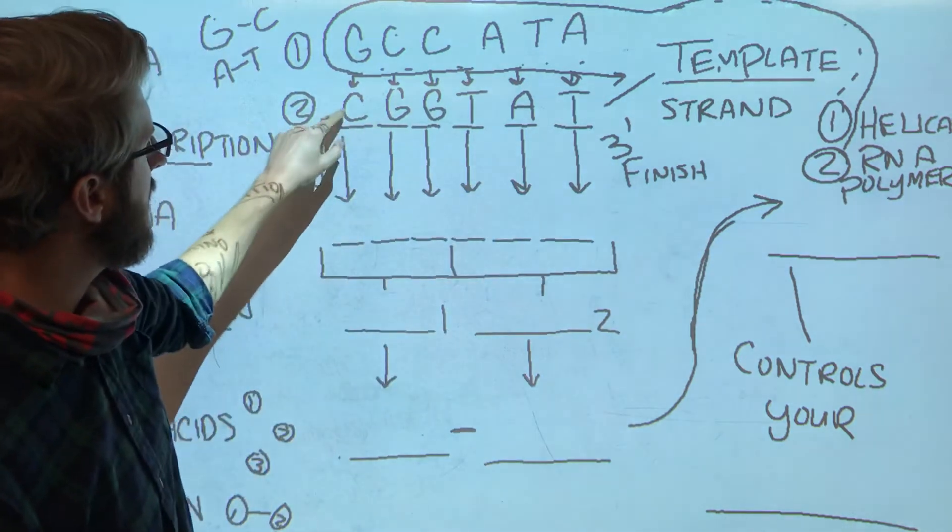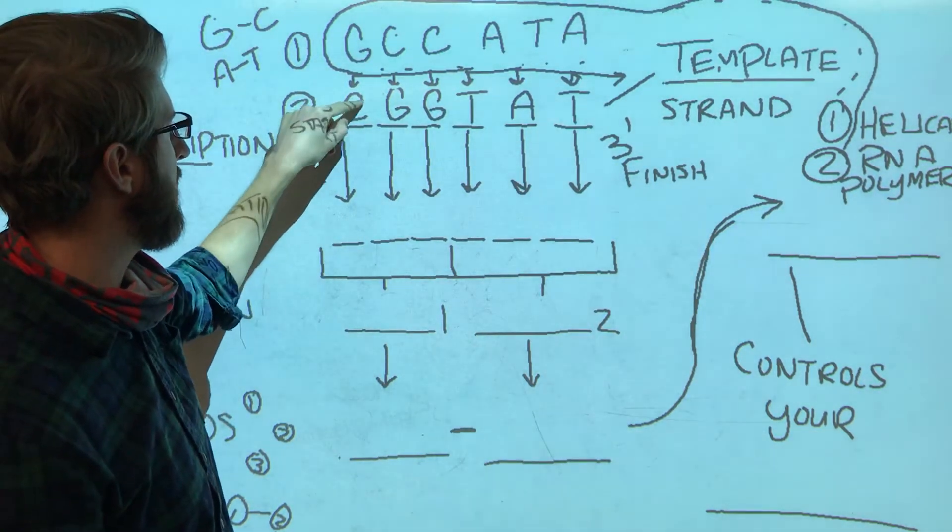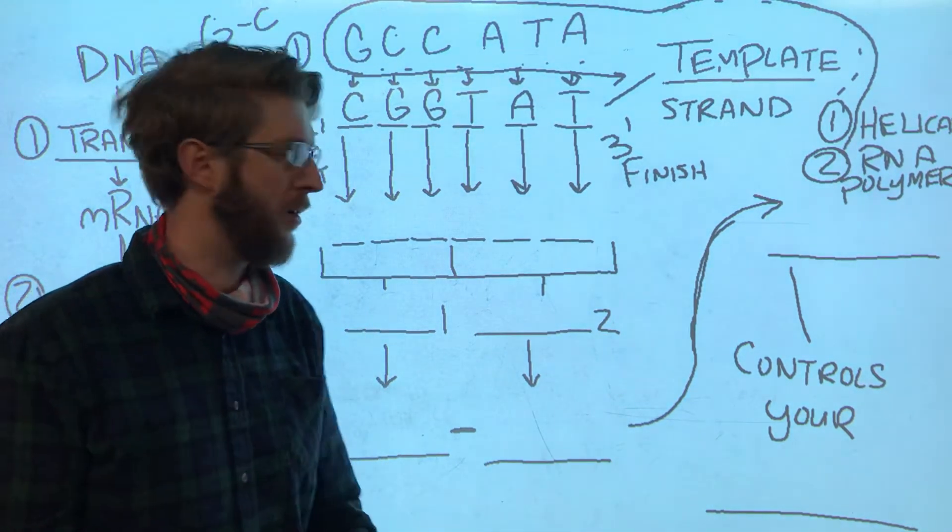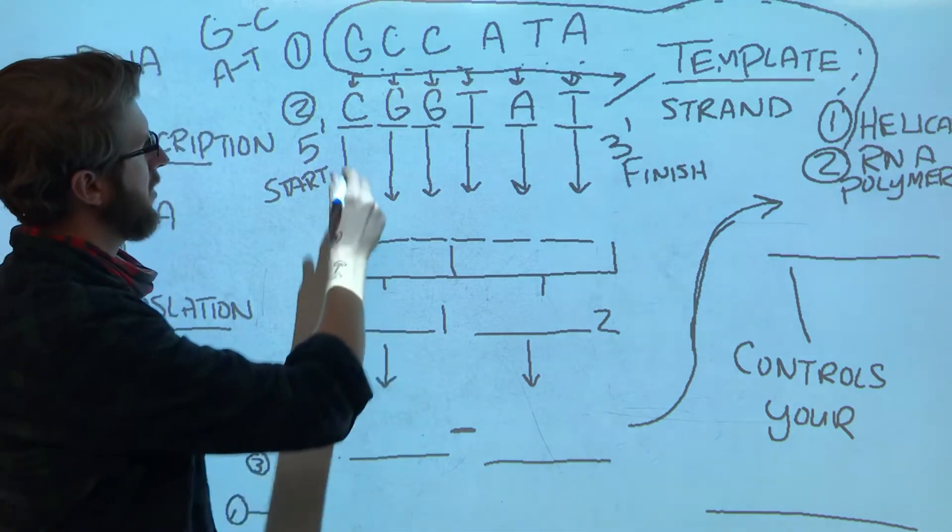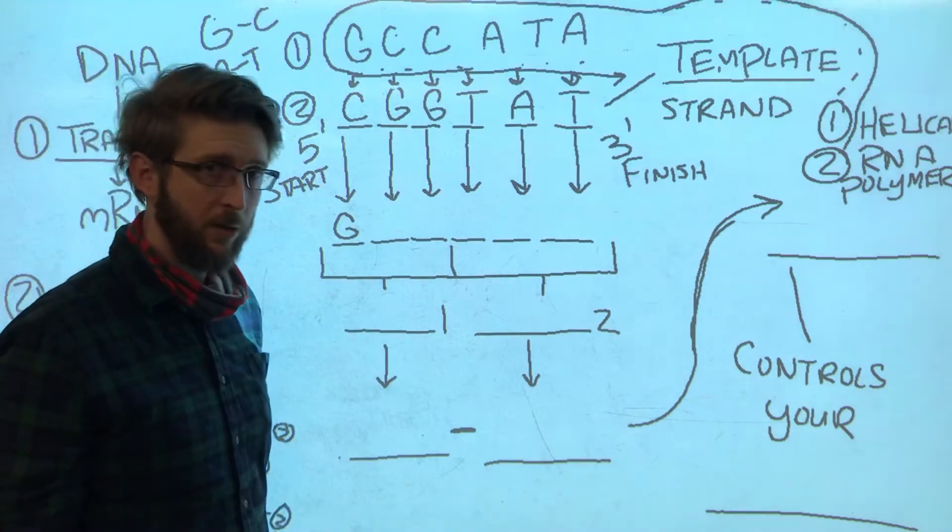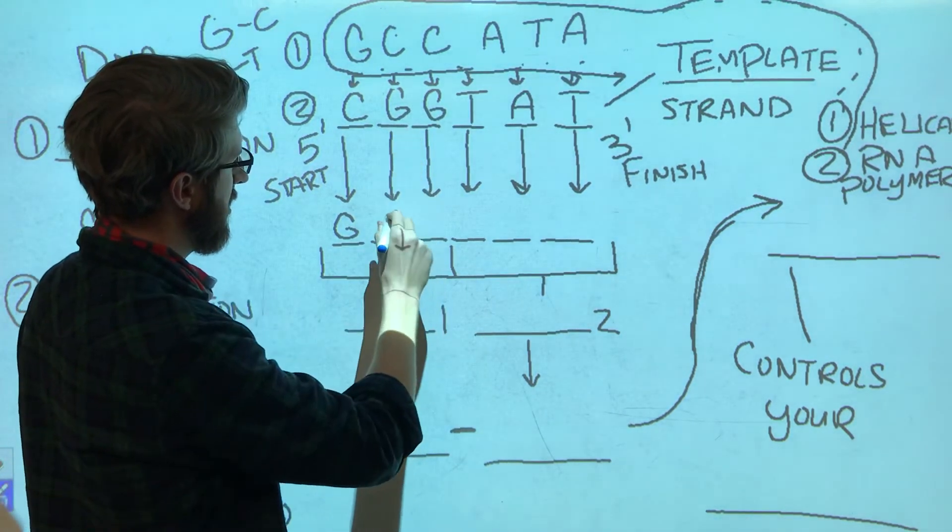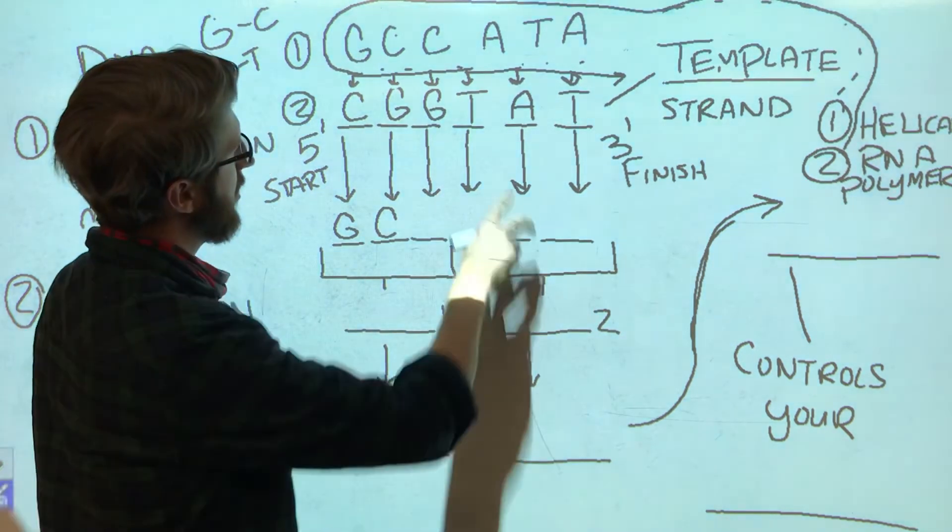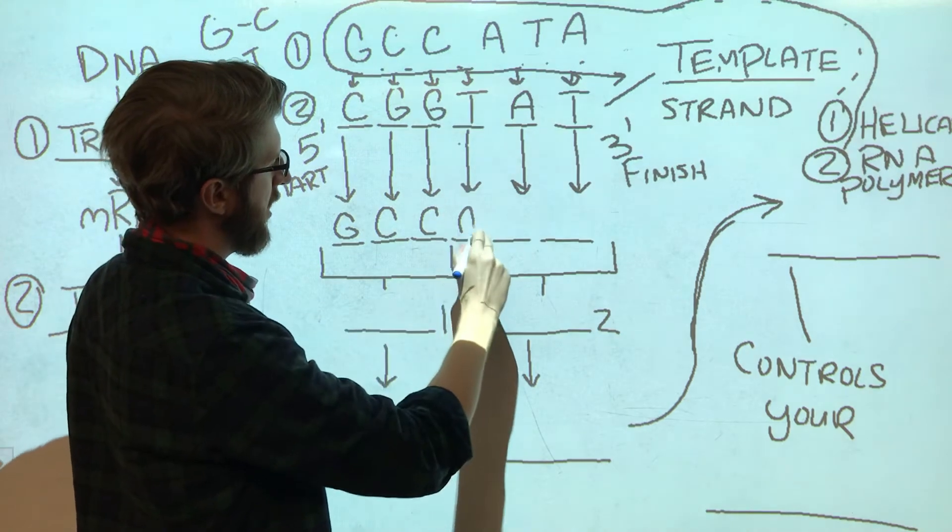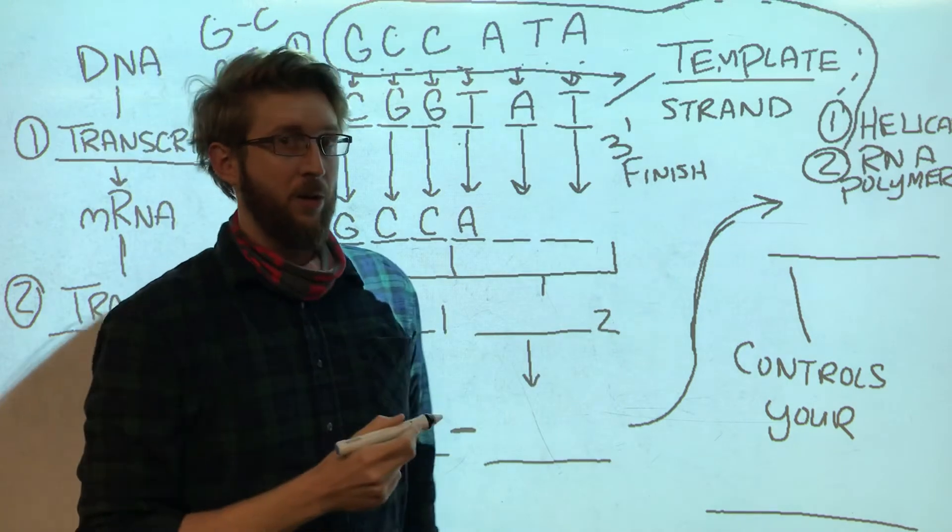All right, so now that we have these two strands separated by helicase, this enzyme RNA polymerase is going to read every base, and we're going to convert every base in DNA into its RNA counterpart. So across from C we're going to find a G—base pairing rules. And across from G we're going to convert that to a C. We're going to convert G to a C, convert T to an A, convert A to—should be a T, shouldn't it?